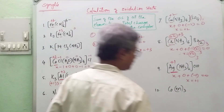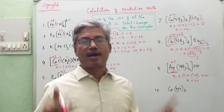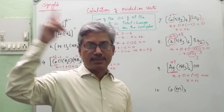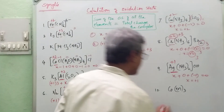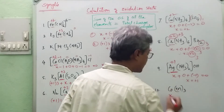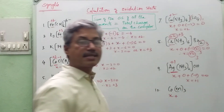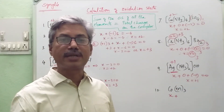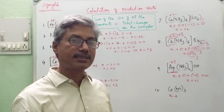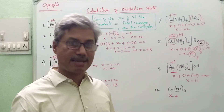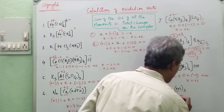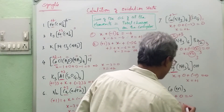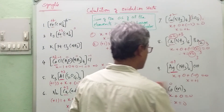Last one. There is no outer bracket, meaning it is one entity with total charge 0. Let the metal oxidation state be x. 'en' stands for ethane-1,2-diamine (ethylenediamine), which is a neutral ligand: 0 × 3 = 0. This must equal 0. This means x = 0. The metal is in the 0 oxidation state.